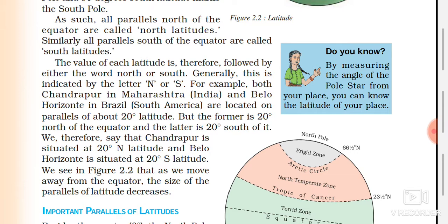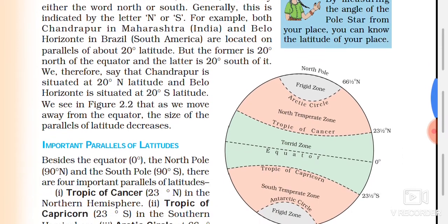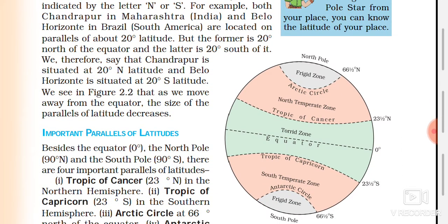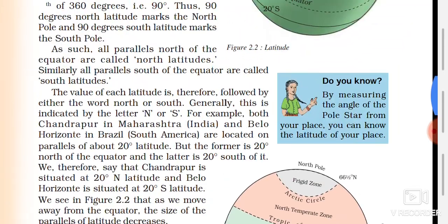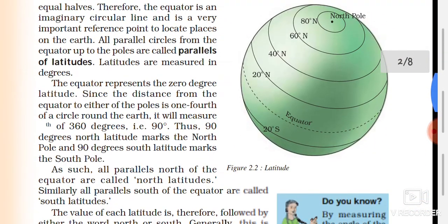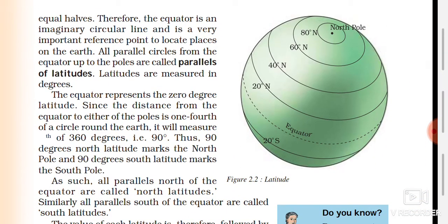As we see in figure 2.2, as we move away from the equator the size of the parallel latitudes decreases — the circles become smaller as you move toward the poles.